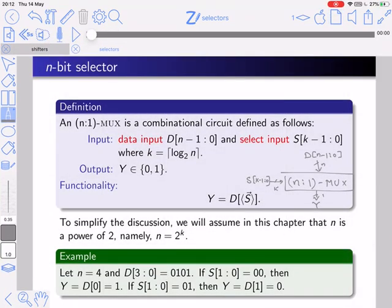Now we want to extend the definition of a multiplexer to data inputs of N bits. We call this an N-bit selector, and we call this circuit an N-to-1 multiplexer, or N-to-1 MUX. It's a combinational circuit defined as follows: it has N bits of data input, and it has K bits of select input, where K equals log of N.